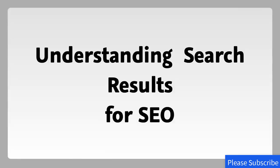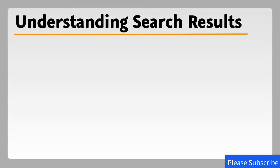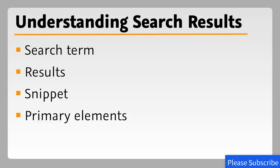To learn search engine optimization, the best teacher is simply evaluating the search engine results page, because it shows you what the search engines deem as most vital and important information. We can learn from what it shows the searcher and apply that to our own websites. We're interested in the term people use, the results and how they're shown, whether we can take advantage of blended results, what we have to compete with, and what the snippet is. We're going to break down the snippet — basically that's the listing for your website — and look at the primary elements of the search result page.